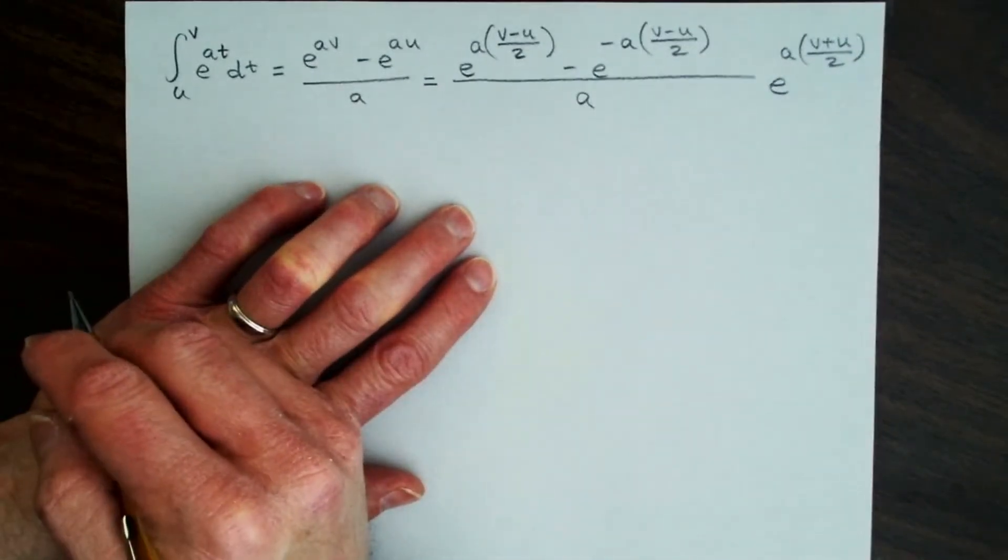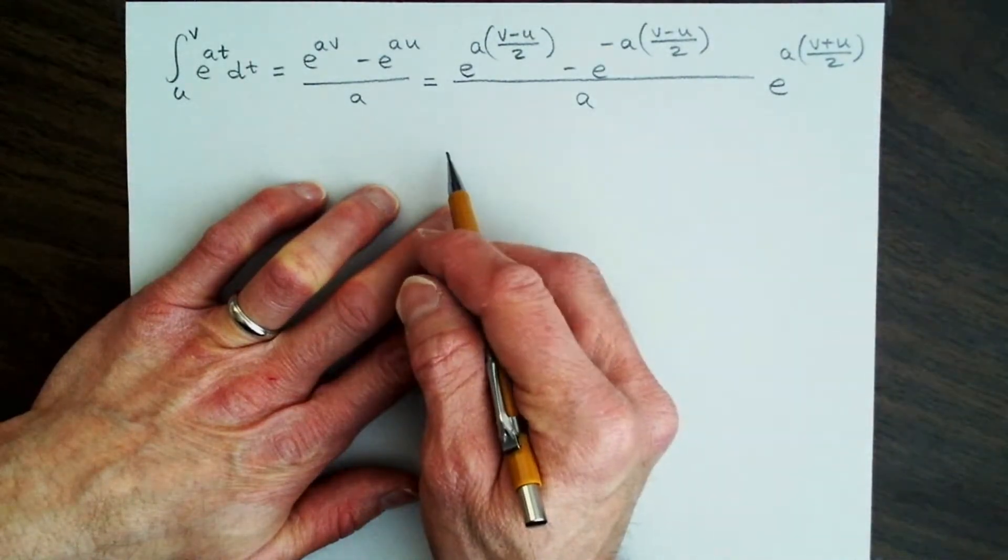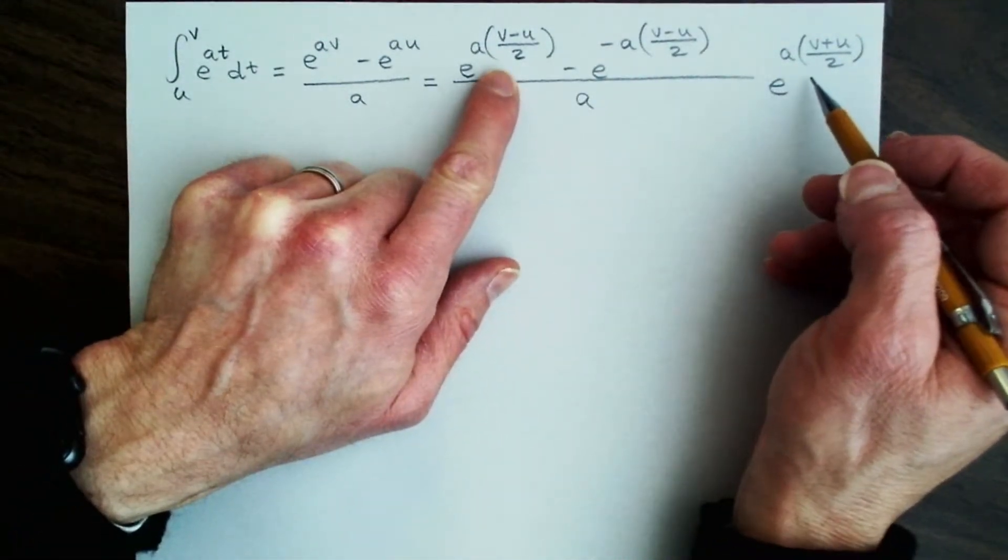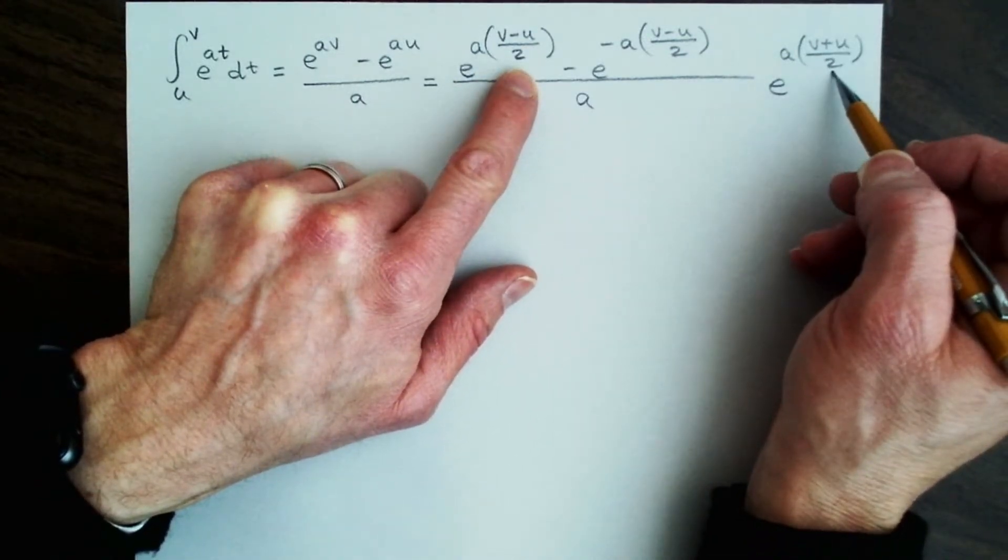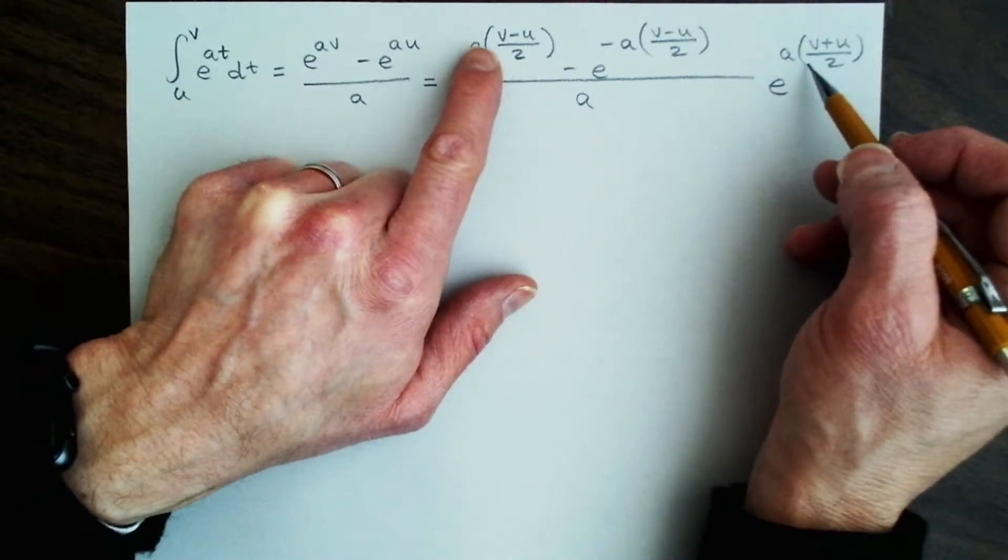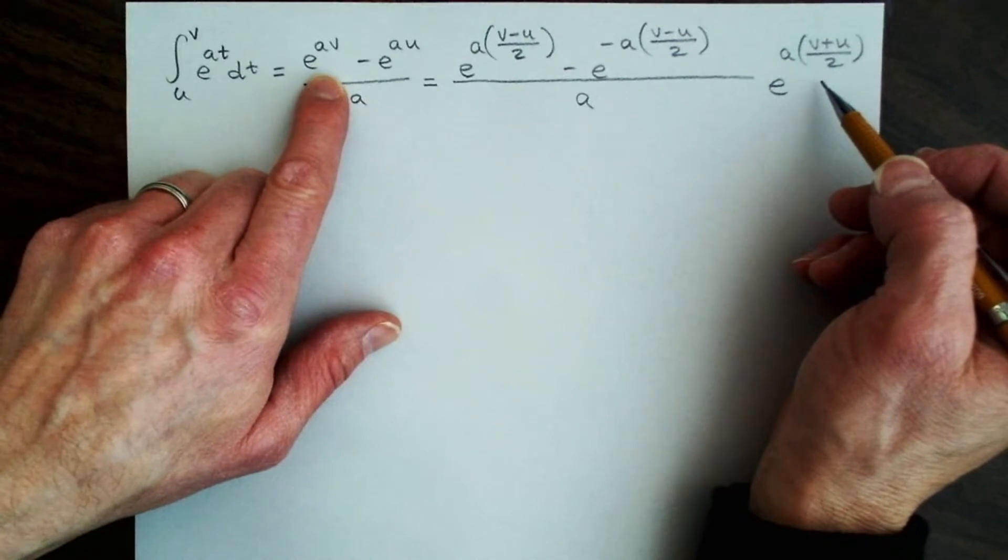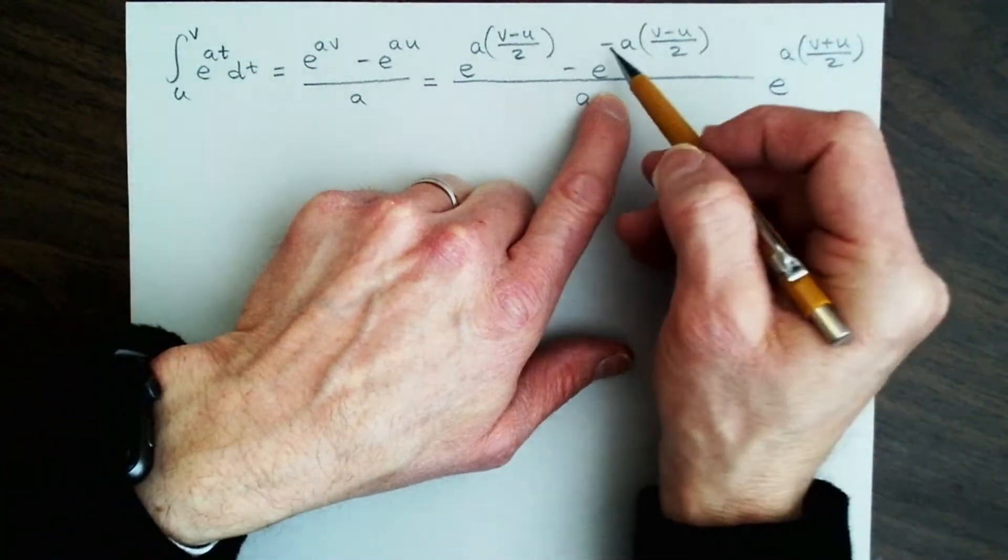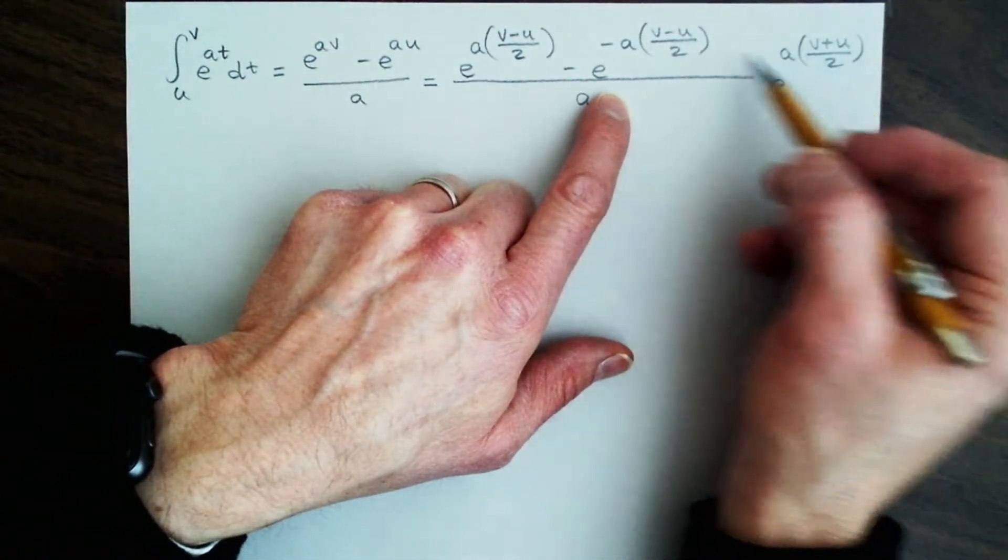You can check that this is correct by just multiplying this exponential back into these two terms. If we multiply by the first term, notice that we have a negative u over 2 and a positive u over 2, so those are going to cancel. And then we have v over 2 plus v over 2, so that just gives us a times v. So we recover the first term.